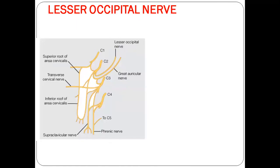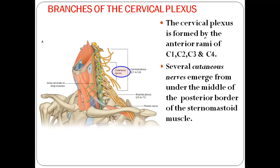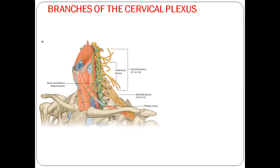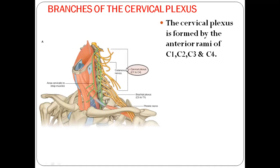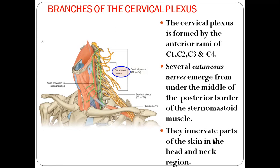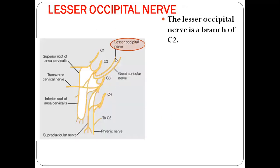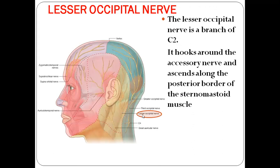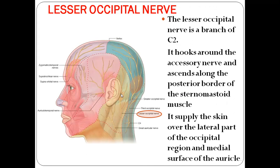The cervical plexus is formed by the anterior rami of C1, C2, C3, and C4. Several cutaneous nerves emerge under the middle of the posterior border of sternocleidomastoid to innervate skin of the head and neck region. The lesser occipital nerve, a branch of C2, hooks around the accessory nerve and ascends along the posterior border of sternocleidomastoid to supply skin over the lateral occipital region and medial surface of the auricle.